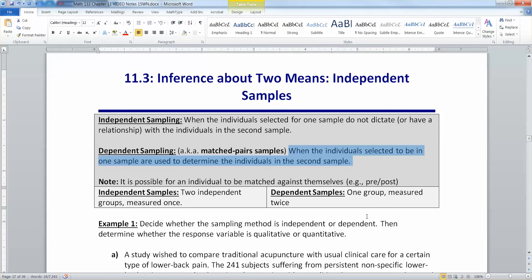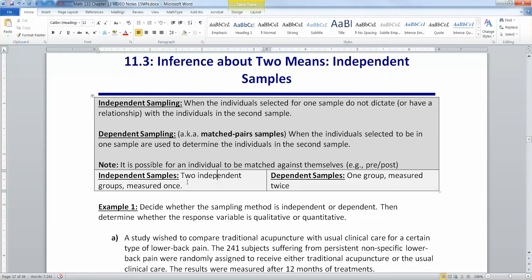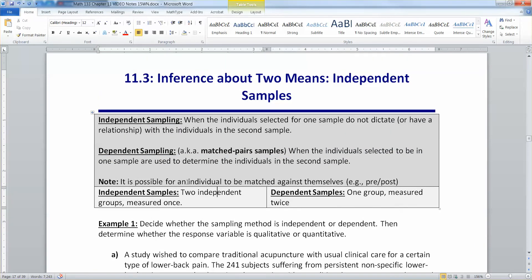Dependent samples, you can't do that. It's 50 in 50, and they're going to be linked to each other somehow, like husbands and wives, one twin and another twin, or you against yourself - you pre-test, you post-test, things like that. So again, remember that independent samples usually are two independent groups measured one time, whereas dependent samples are one group measured twice. That's why it has to have the same number of people, because it's one group.